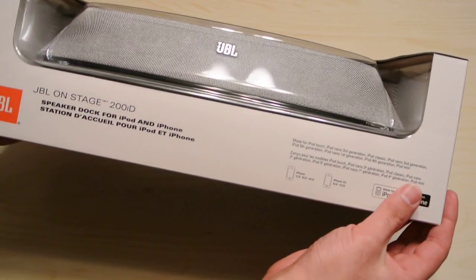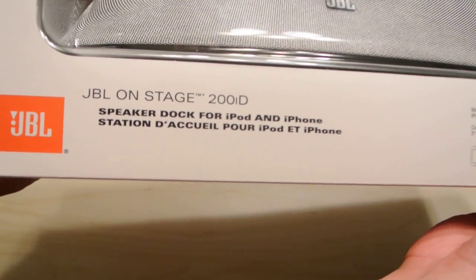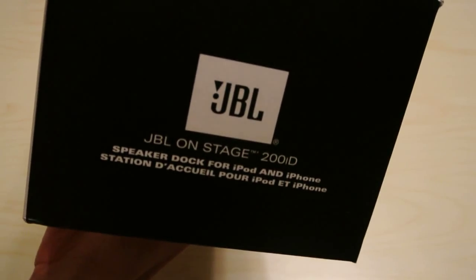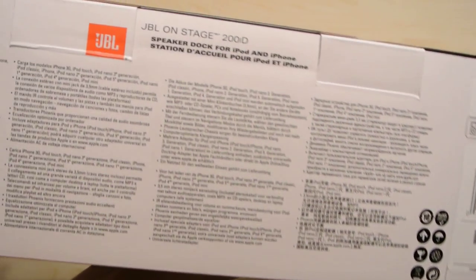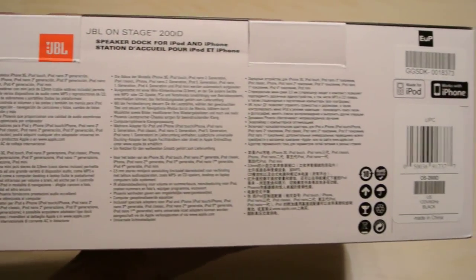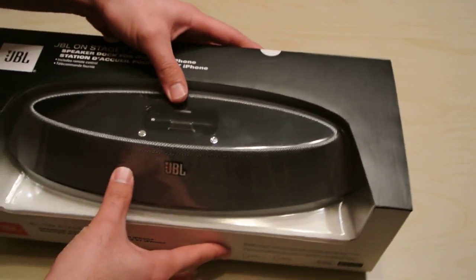So I'm just going to show you around the box a little bit first. You can see the name of it, speaker for iPod and iPhone. On the side, we've just got the JBL. On the back, we just have some information. Nothing too important there, so we're just going to pull it apart.